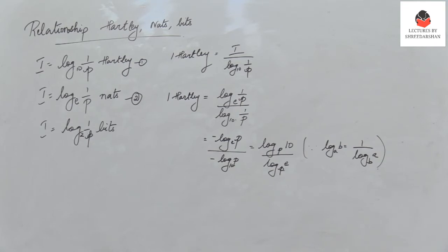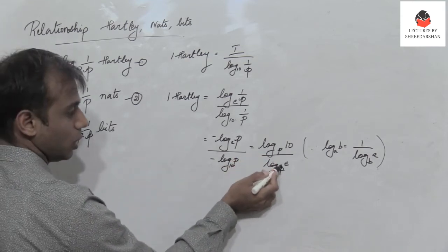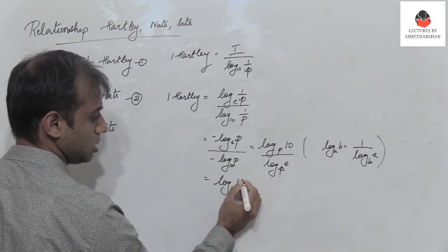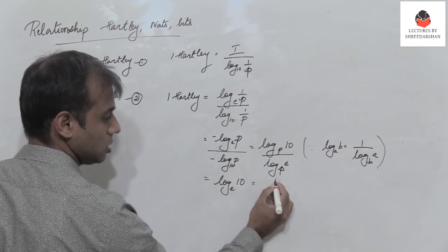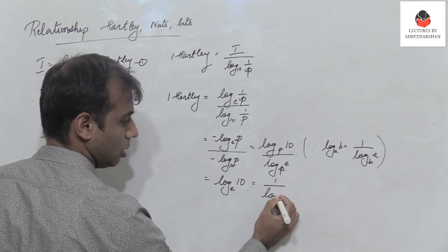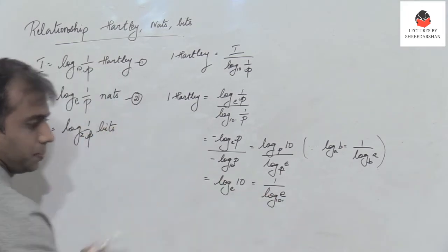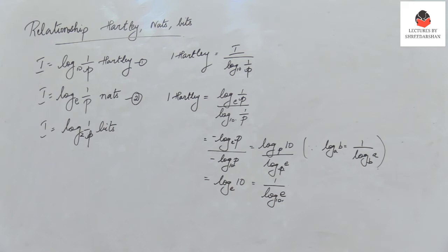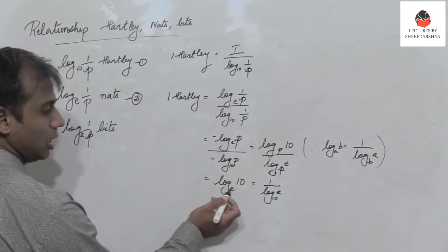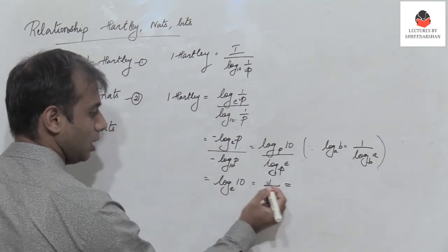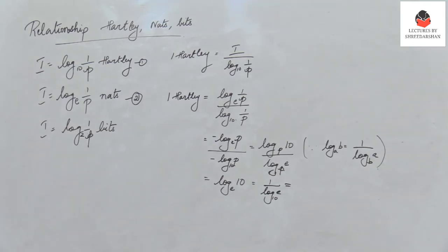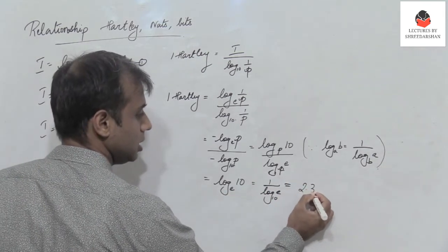Using the change-of-base property, this becomes log 10 to base P divided by log e to base P, which simplifies to log 10 to base e — since the bases are the same, we can write this as 1 divided by log e to base 10. The value of log 10 to base e, or 1 divided by log e to base 10, equals 2.303 Nats.